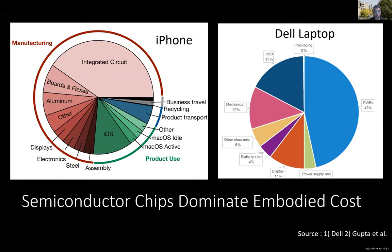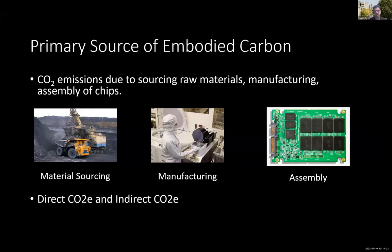You might think a laptop's metal casing dominates the embodied cost, but that's not the case. The majority of embodied cost comes from silicon — especially the CPU, RAM, and SSD — which contribute a significant amount of carbon during manufacturing.